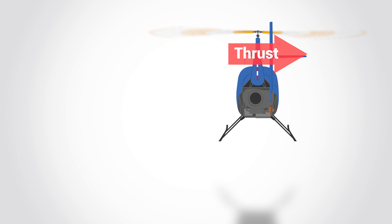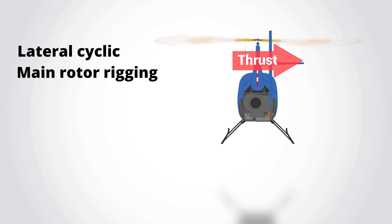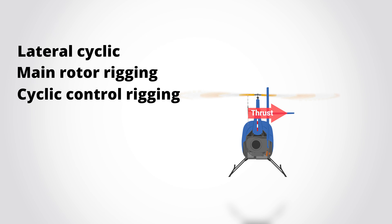There are a couple of methods of dealing with this effect. The first one is applying lateral cyclic in the opposite direction of the helicopter's movement. This means the pilot would be applying slight left cyclic in this scenario to keep the helicopter in place. Other methods include rigging the main rotor mast slightly to the left, which would move the vertical component of the main rotor thrust to cancel out the translating tendency. Another method is to rig the cyclic control slightly in the opposite direction of the tail rotor thrust so that the pilot doesn't have to apply a lot of pressure on the cyclic.